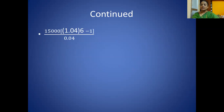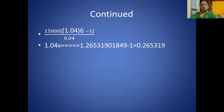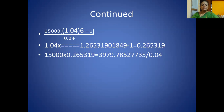Calculate 1.04 raised to the power of 6: enter 1.04, press multiplication, then press equal 5 times. You get 1.26531901849. Subtract 1 to get 0.26531901849, multiply by 15,000 to get 3,979.79, divide by 0.04. Final answer: 99,494.63.